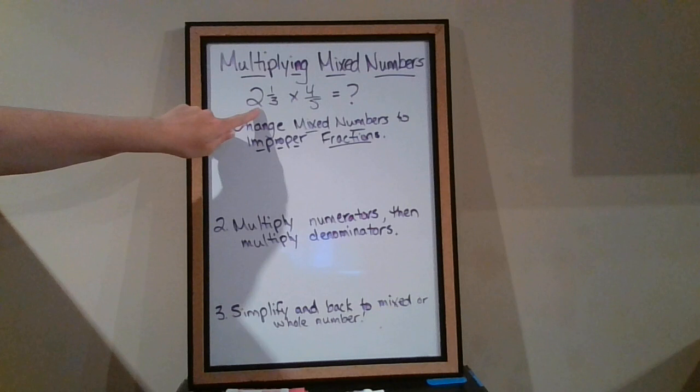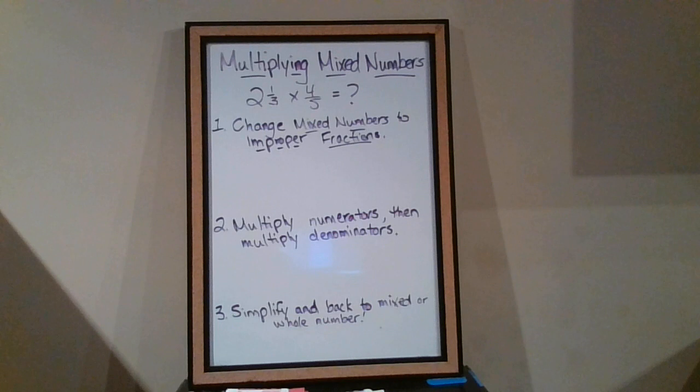Mixed numbers, remember, are when we have a whole number like two, along with a fraction, so two and a third is a mixed number.